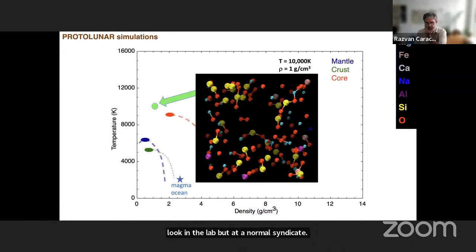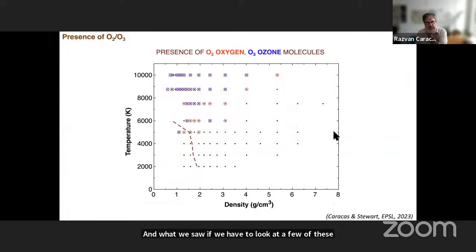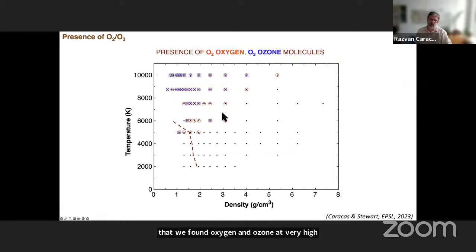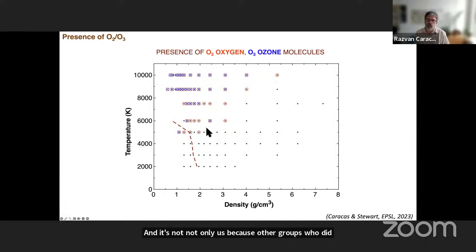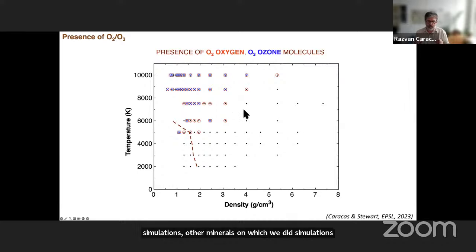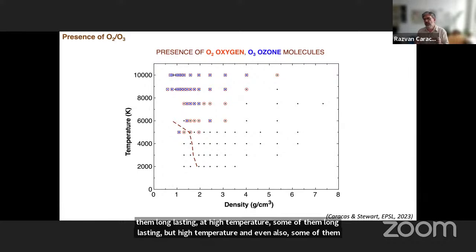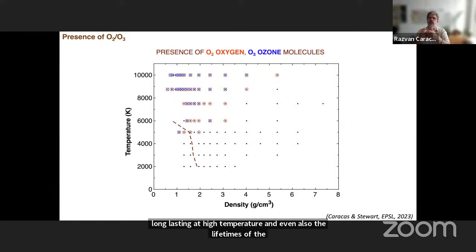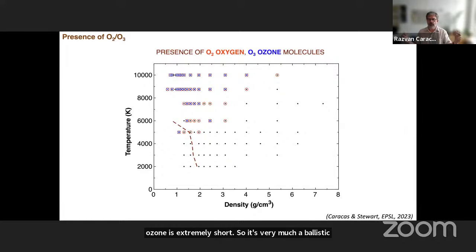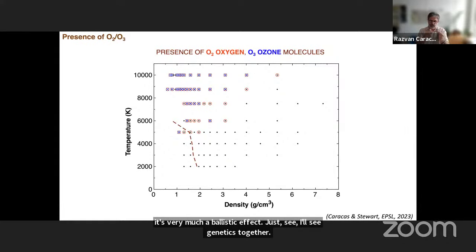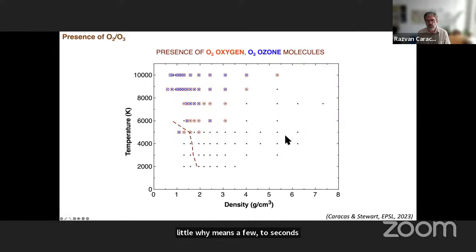One of the most intriguing properties was that we found oxygen and ozone at very high temperatures. It's not only us, because other groups who did simulations on other minerals would always form these oxygen molecules — some of them long lasting — at high temperature, and even ozone. The lifetime of the ozone is extremely short, so it's very much a ballistic effect. Just three oxygen atoms getting together, they stay there for a few femtoseconds — fragments of a molecular vibration — and they go away. While the oxygen molecules, they are present and last for many vibrations.